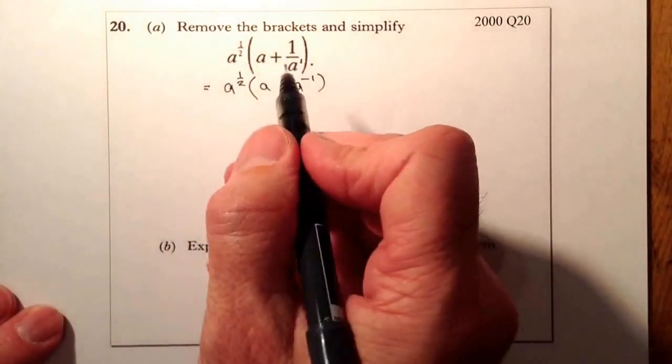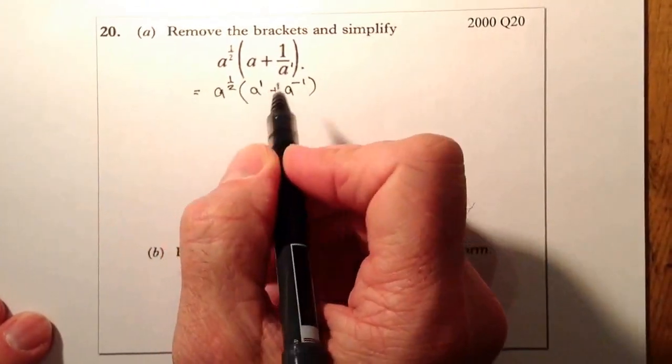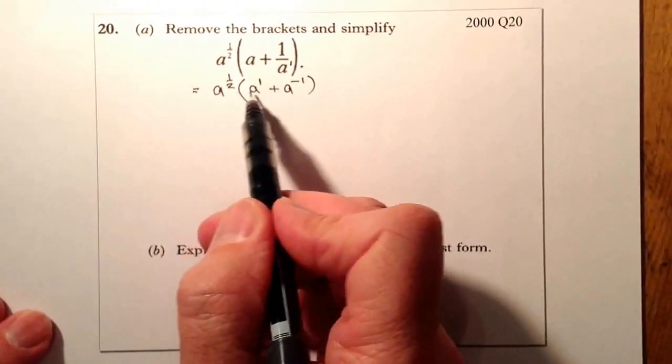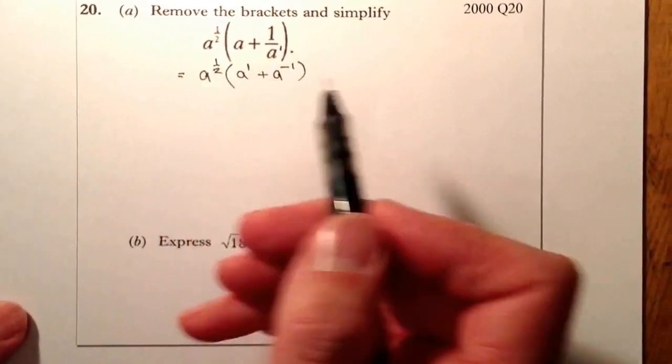What I'll then do is I'll multiply this across, and remember that is an a to the power of 1 there. When we multiply things with indices, we add the indices together.